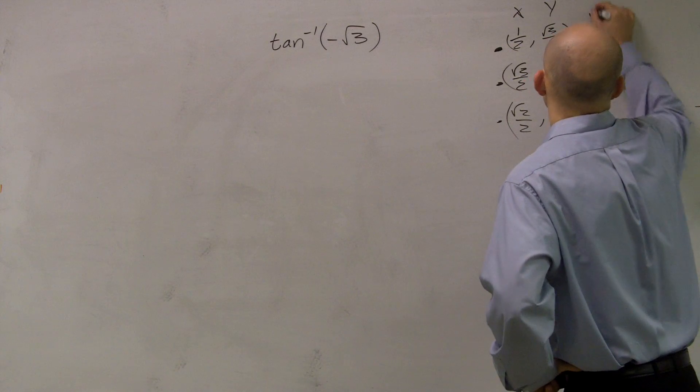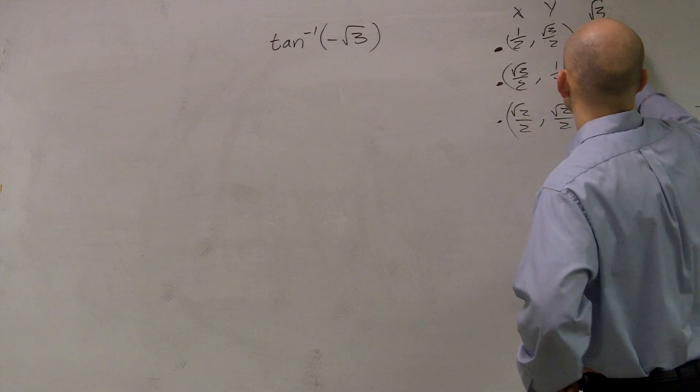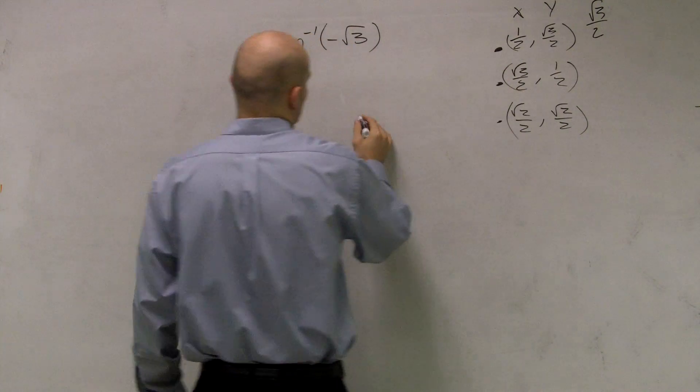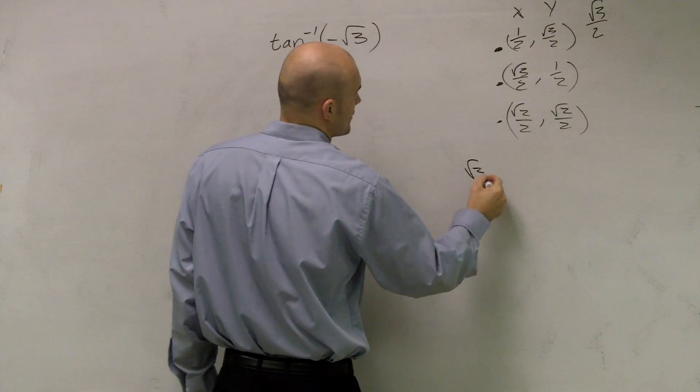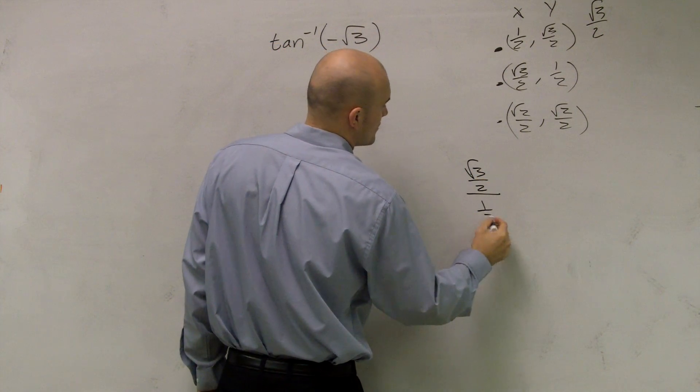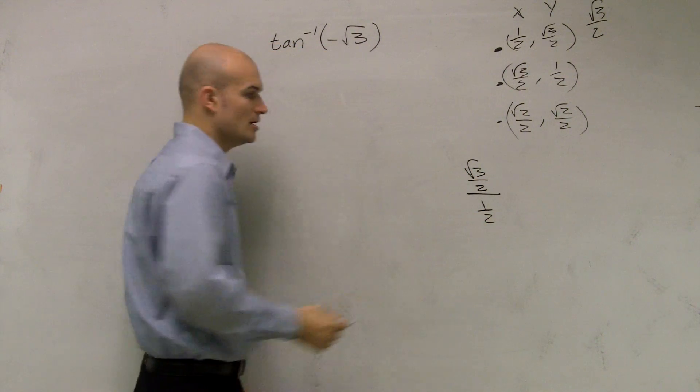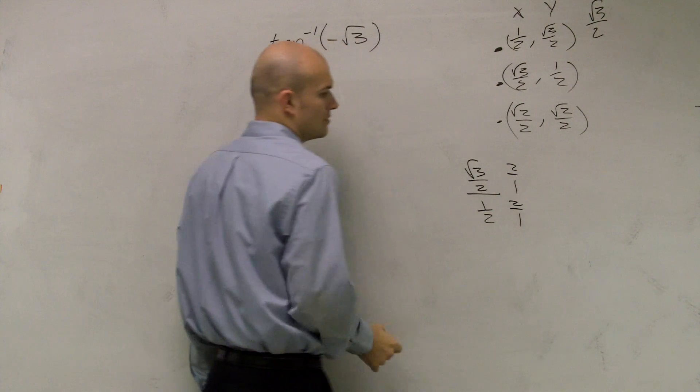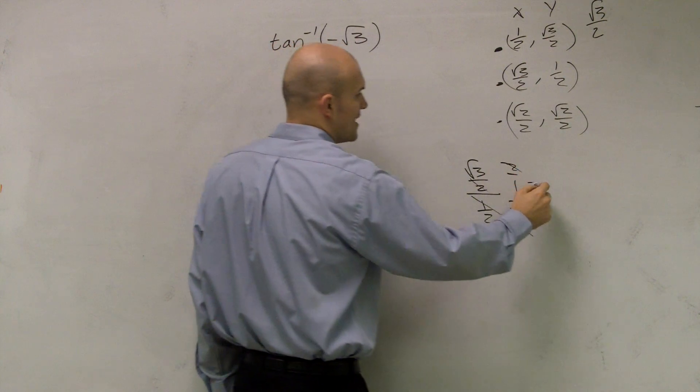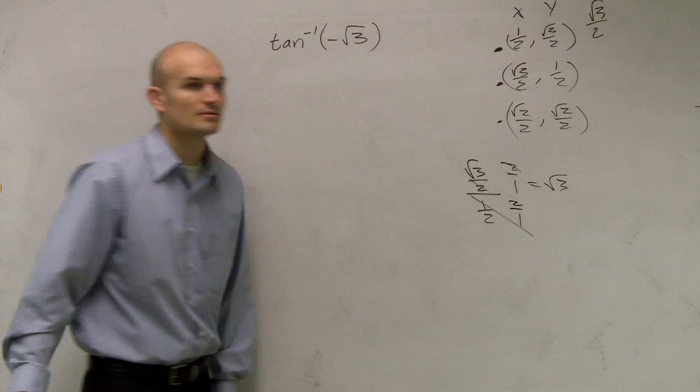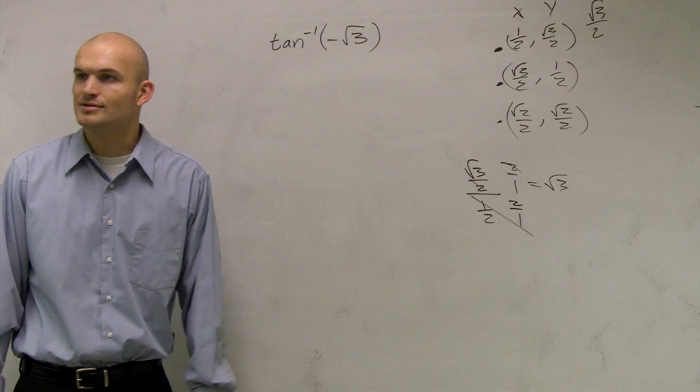If I do radical 3 over 2 divided by 1 half, multiply by the reciprocal, that cancels the 1, and that cancels to a radical 3. Hey, guess what? We got our answer.